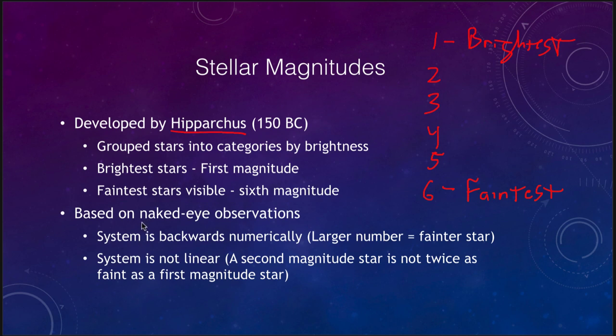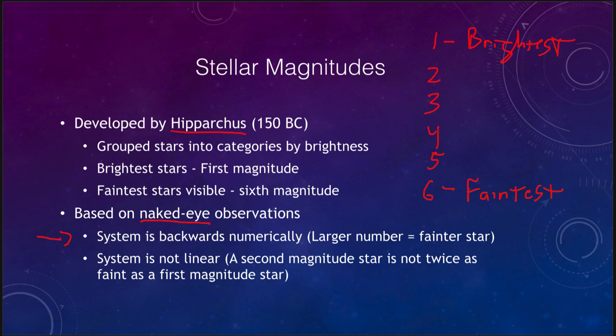This was based on naked eye observations — no telescopes or binoculars or any other devices. Because this system carries over to what astronomers use today, it gives us two difficulties that can often confuse people learning the magnitude system. First, the system is backwards numerically: a larger number means a star is fainter. That's not how we measure most things — higher numbers for height, mass, or temperature all mean more of that quantity. In magnitudes, however, the bigger the number, the fainter the star.